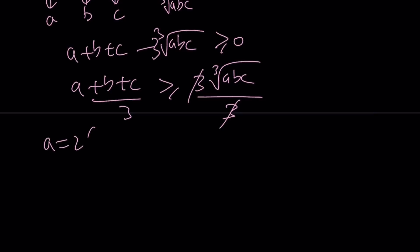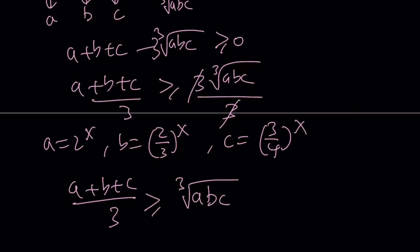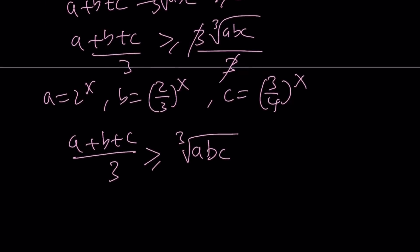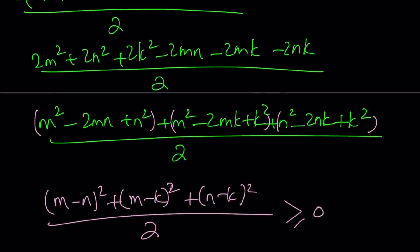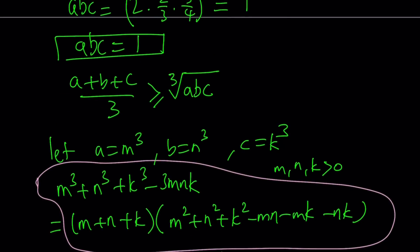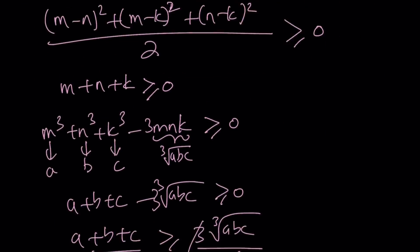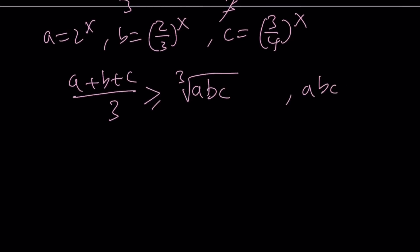Remember, we had A equals 2 to the X, B equals 2 thirds to the X, and C equals 3 fourths to the power of X. And we know that ABC are all positive. Therefore, we're just going to consider the AM-GM for ABC. And we know that the average is going to be greater or equal to the cube root of ABC. And we also know that ABC is equal to 1. Therefore, this is going to equal 1. From here we get A plus B plus C over 3 is greater or equal to 1. And that is going to give us A plus B plus C is greater than or equal to 3.